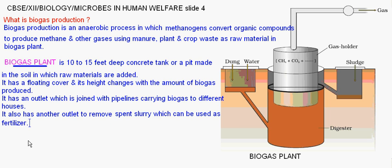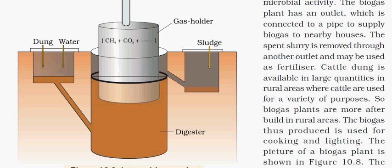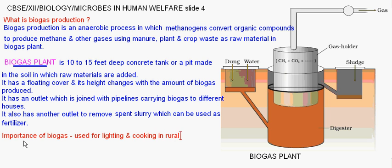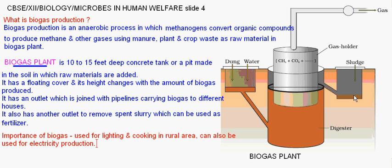The importance of biogas: it is used for lighting and cooking in rural areas, and can also be used for electricity generation. As you can see in the diagram, this is the slurry tank or dung water, this is the gas holder, and this is the sludge — that is, the mixture of manure, plant and crop waste along with water. This is the digester, and this is where the biogas is passed out.